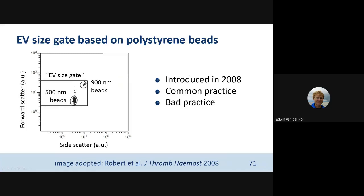So in 2008, people came up with an idea to use a polystyrene bead of 500 nanometers and polystyrene beads of 900 nanometers to set the gate. A gate in this case means that lines were set around these beads, and then all the particles which fall within these lines were thought to be EVs.